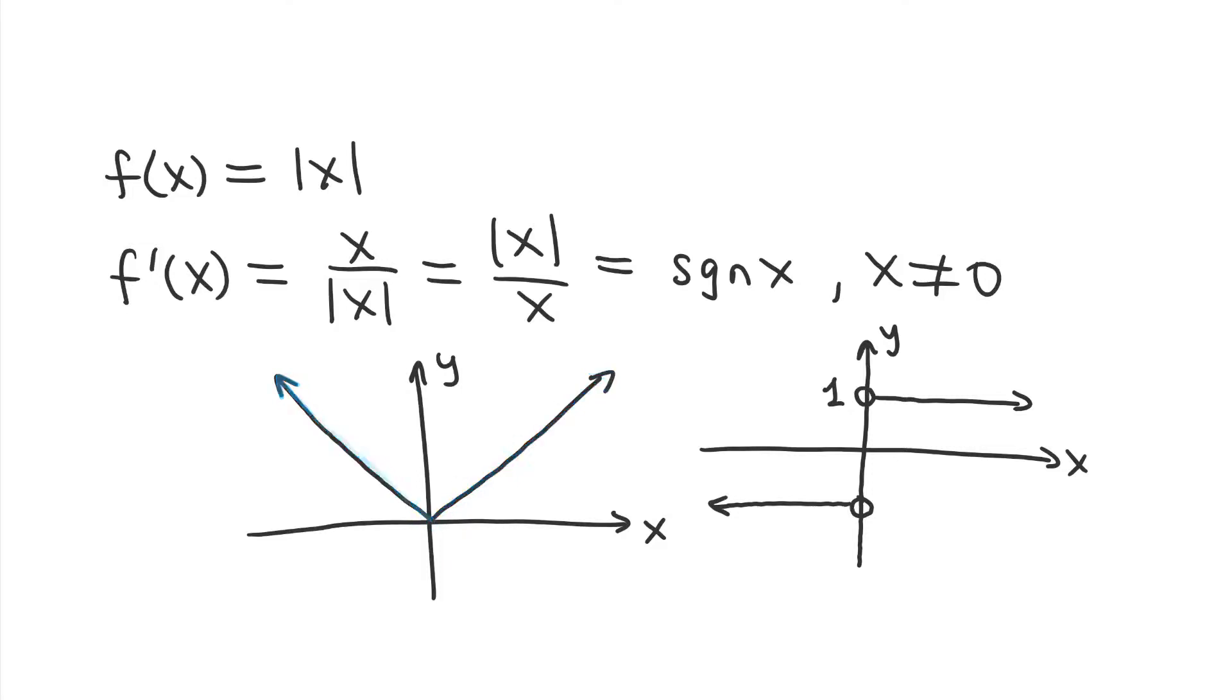Anyhow, the derivative of the absolute value function gives us this expression, x over the absolute value of x, which is actually equivalent to the absolute value of x over x, and it has a special name. We call this the sign, in other words S-I-G-N, not the trigonometry sine.